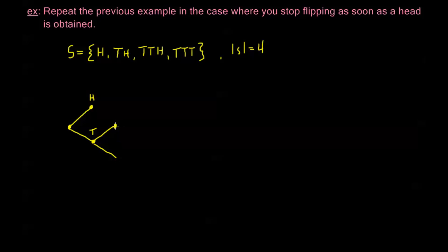So if I flip a tails in the first simple flip, I can flip a heads or a tails for my second flip. And again, if I get a tails for my second flip, I can get a heads or a tails for my third flip. And we're only flipping three times. So this is going to be the end of my tree diagram.